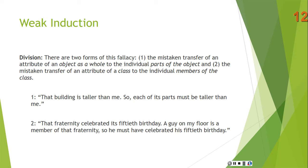Then we have division, which also has two forms. One is the mistaken transfer of an attribute of an object as a whole to the individual parts of the object. Two is the mistaken transfer of an attribute of a class to the individual members of the class. For the first form: 'That building is taller than me, so each of its parts must be taller than me.' Obviously it doesn't follow — the parts may each be six inches tall while the building is 2,000 feet tall.